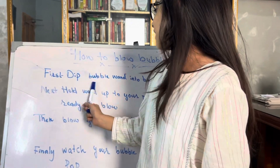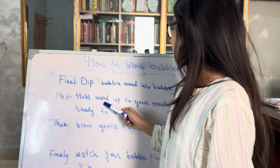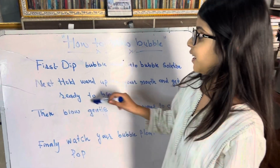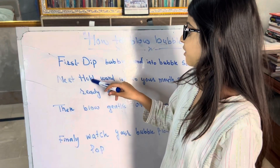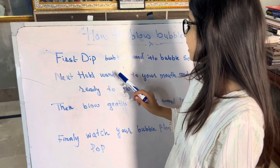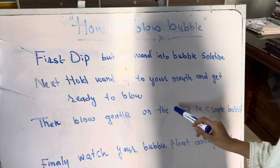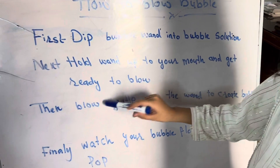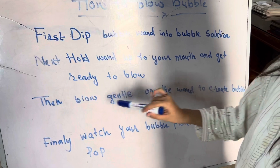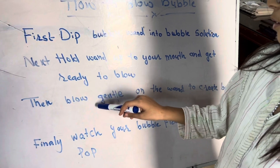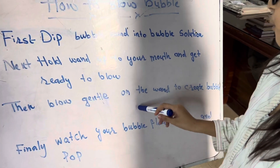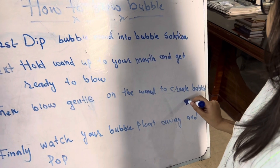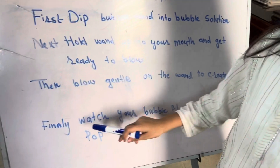First step, dip the wand into bubble solution. Next, hold the wand up to your mouth and get ready to blow. Then blow gently on the wand to create bubbles.